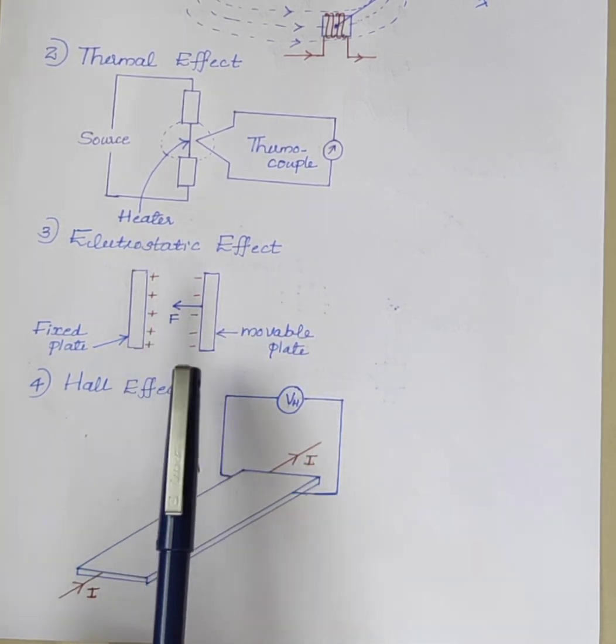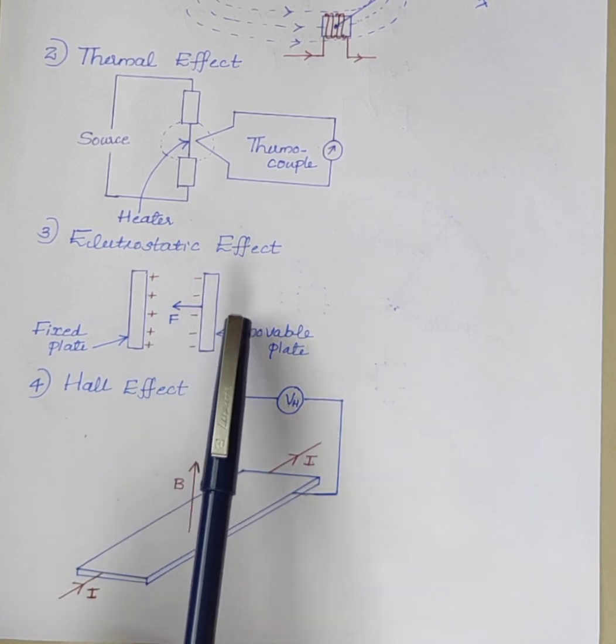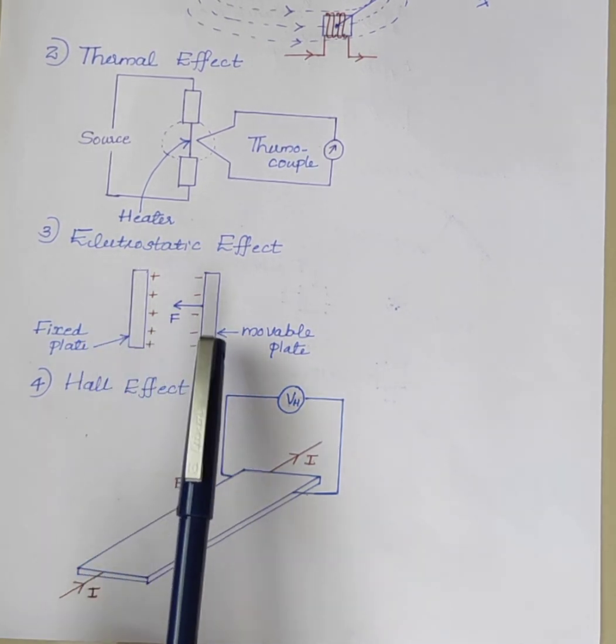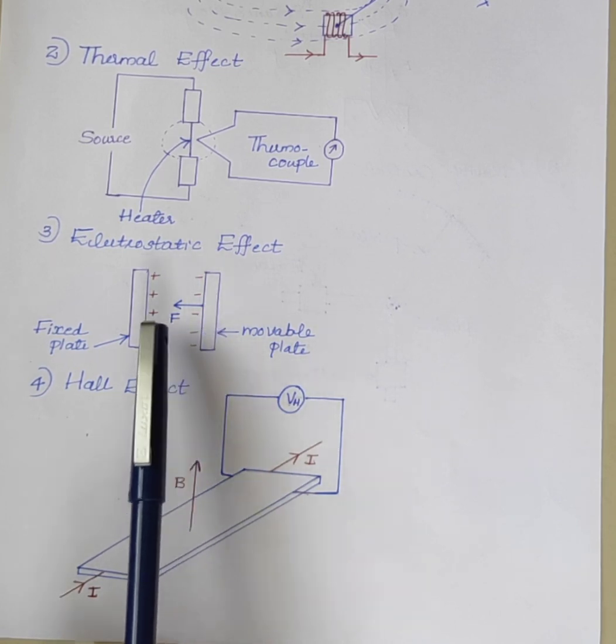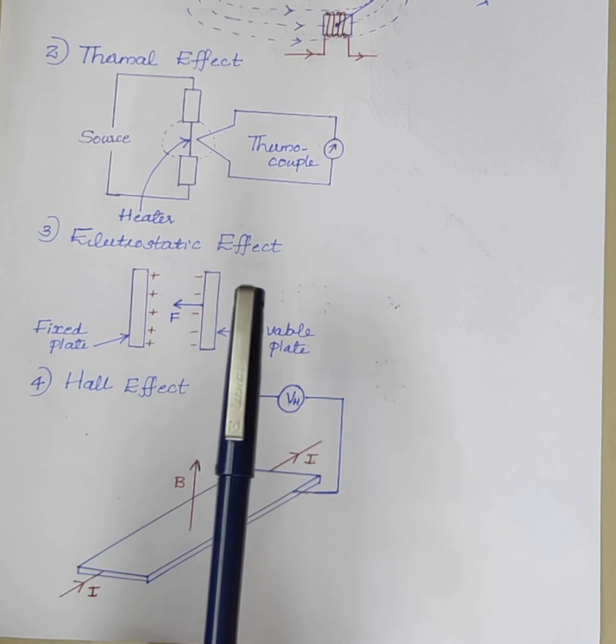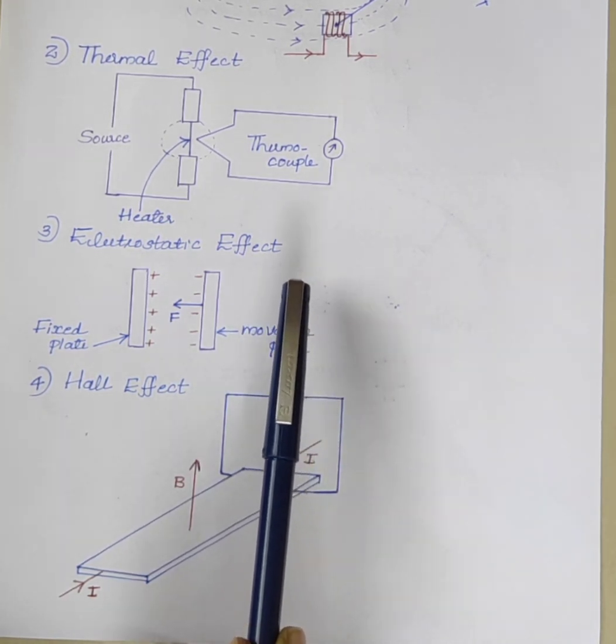When the voltage is applied to the plates, there is a force of attraction induced between them. The movable plate tries to move towards the fixed plate. Due to the movement of the plate, there is a proportional change in the pointer of the instrument.